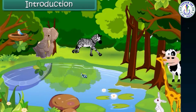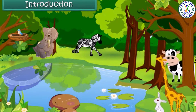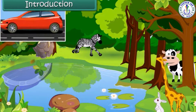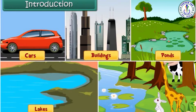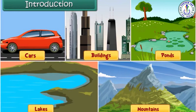We see living things such as trees, animals, as well as non-living things like cars, buildings, ponds, lakes and mountains around us. All these things are found on our planet Earth. In this module, you will learn about the Earth and what it consists of.